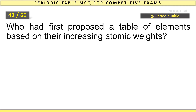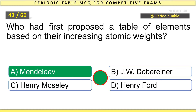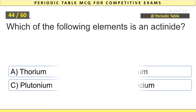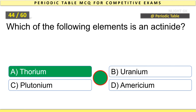Who had first proposed a table of elements based on their increasing atomic weight? Mendeleev. Which of the following elements is an actinide? Thorium.